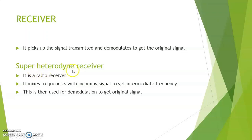The Superheterodyne Receiver is a special type of receiver that works with radio frequencies. It mixes the frequencies with incoming signals to get intermediate frequency. This intermediate frequency is then demodulated to get back the original signal.